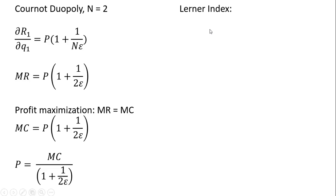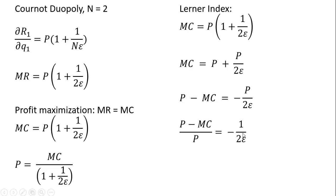In terms of the Lerner Index, we start with MC = P(1 + 1/(2ε)), which gives MC = P + P/(2ε). Moving some things around, we get P - MC = -P/(2ε).